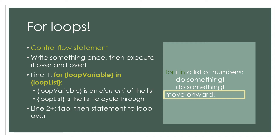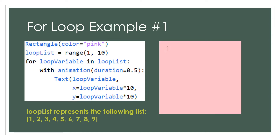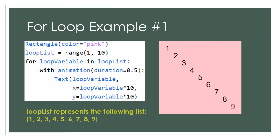Let's see what this all actually means using an example. Here we have a simple for loop animation. Every half second, a number is printed from our list created with range(1, 10). This list will count from 1 up until, but not including, 10, so we get whole numbers 1 through 9.